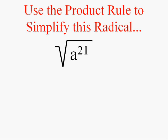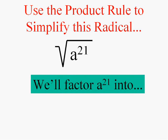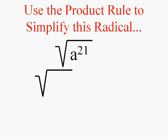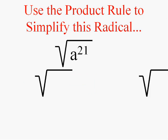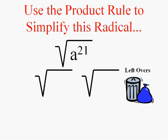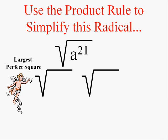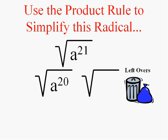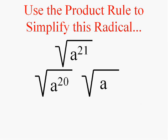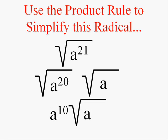How about something like the square root of a to the twenty-first? Don't let it scare you. We're going to factor it into the largest even exponent — the largest perfect square — times whatever's left over. The largest perfect square will be a to the twentieth, and the leftover will be a to the first. The square root of a to the twentieth is a to the tenth, so the answer is a to the tenth times the square root of a.